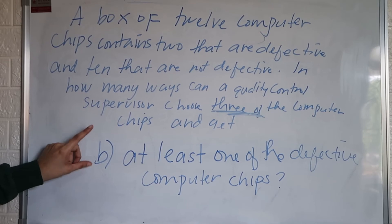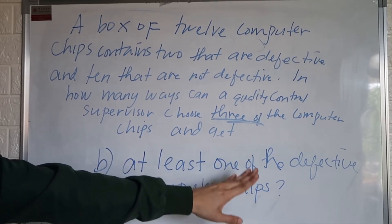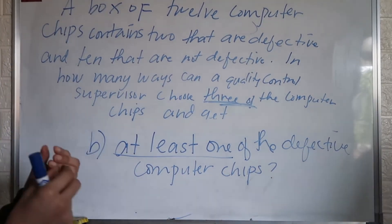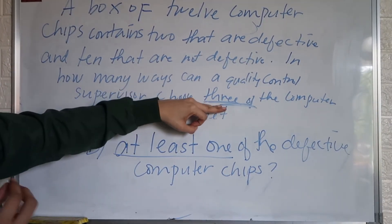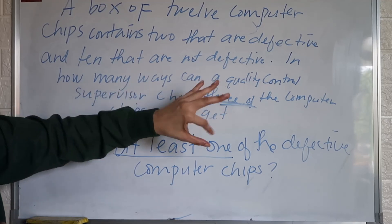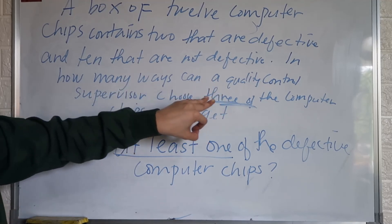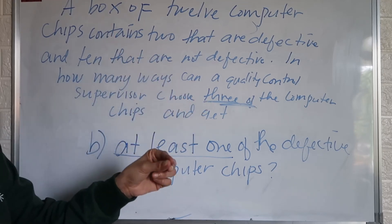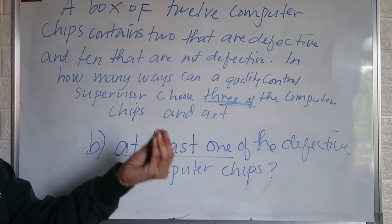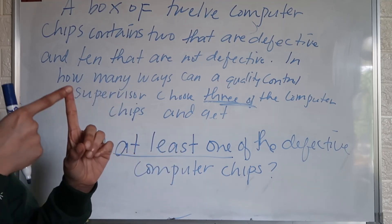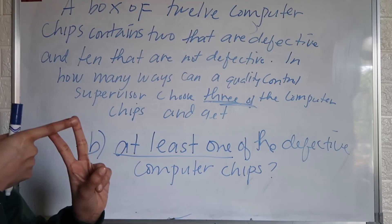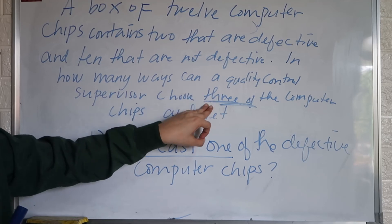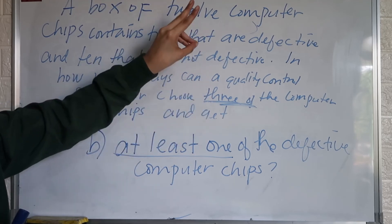Next condition, letter B: at least one of the defective computer chips. At least one means the minimum number of defective chips is one. From the three selections, at least one of the three came from the defective computer chips. So it can be one or two defective chips, since there are only two defective ones.